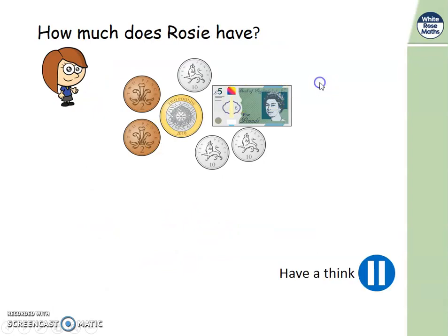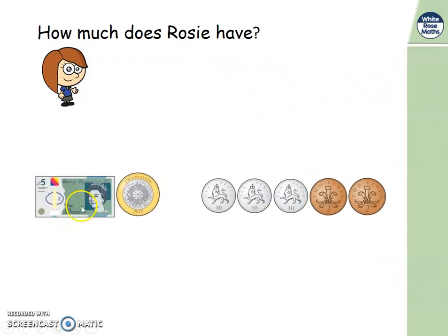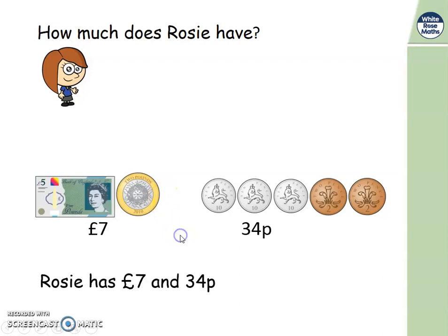How much then does Rosie have? Pause the video and see if you can work it out. Did you remember to sort them into pounds and pence? She's got 5 pounds and 2 more pounds — that makes 7 pounds. Now count the 10 pences: 10, 20, 30, and then count 2 more — 32, and 2 more — 34 pence. So Rosie has 7 pounds and 34 pence.